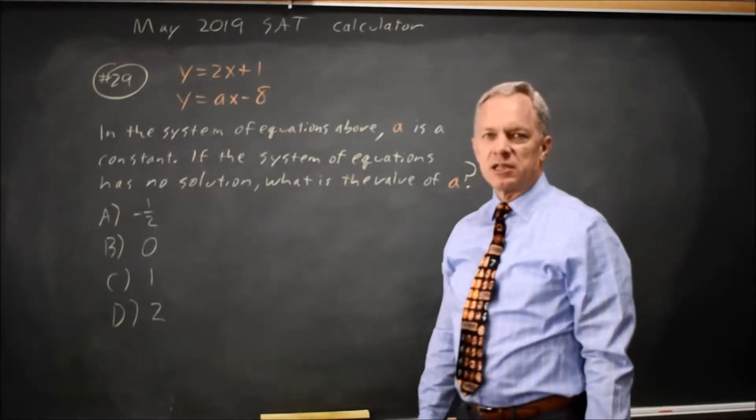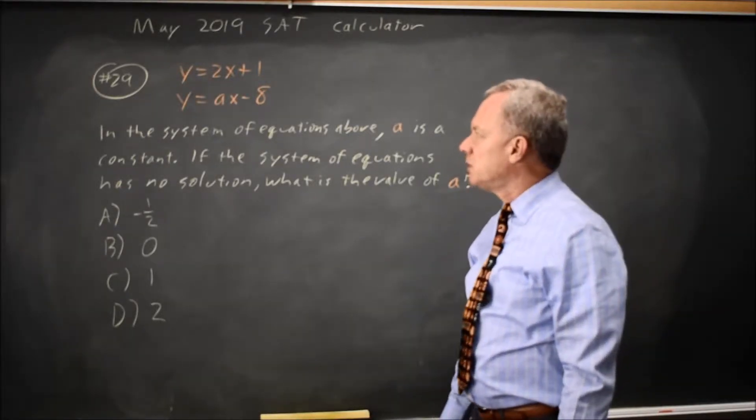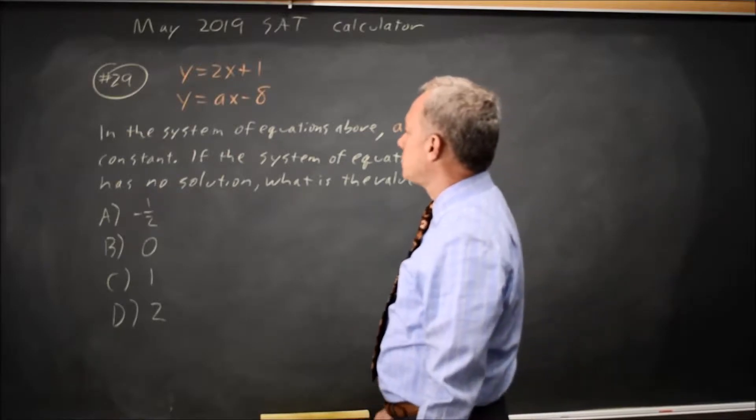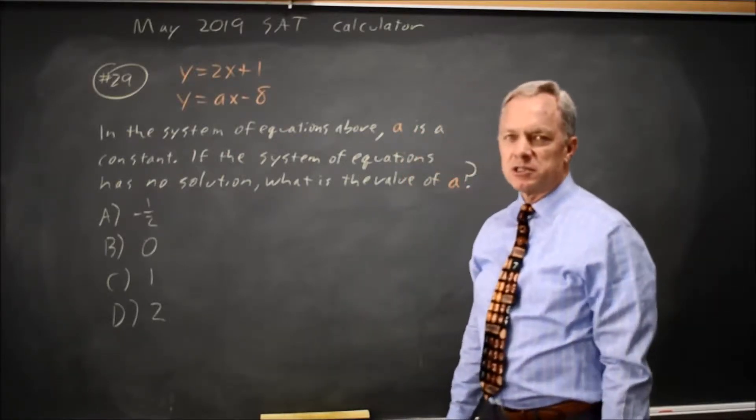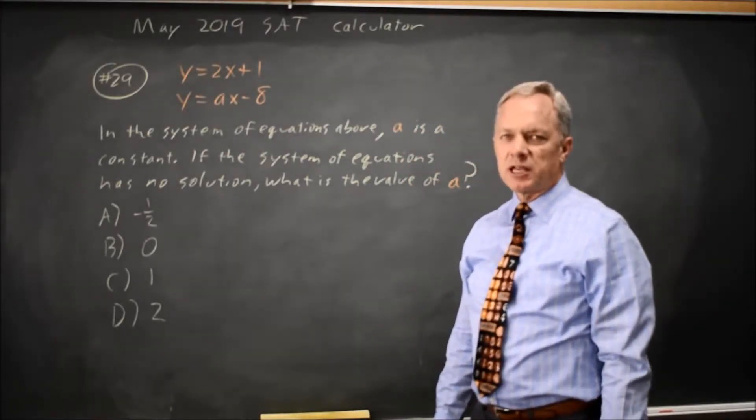They give you a system of equations and say this has no solution. If you have a system with no solution or infinitely many solutions, either one, that means the slopes have to be the same.